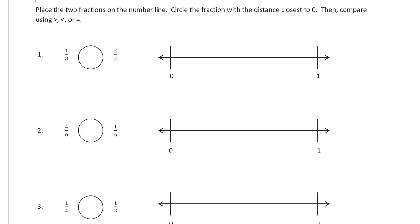Place the two fractions on the number line. Circle the fraction with the distance closest to zero. Then compare them using greater than, less than, or equal to. A hint for remembering which way to point those symbols: the alligator eats the larger number — in this case, the larger fraction.